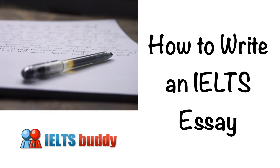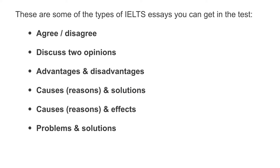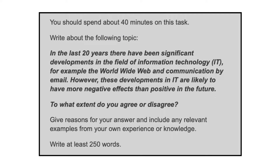In this lesson we're going to look at how to write an IELTS essay. There are some types of IELTS essay that you get commonly in the test, for example agree/disagree, advantages and disadvantages, causes and effects. What we're going to do to show you how to write an IELTS essay is to look at agree/disagree type questions, so although the different question types will vary slightly in the way you answer, they all follow a similar type of format.